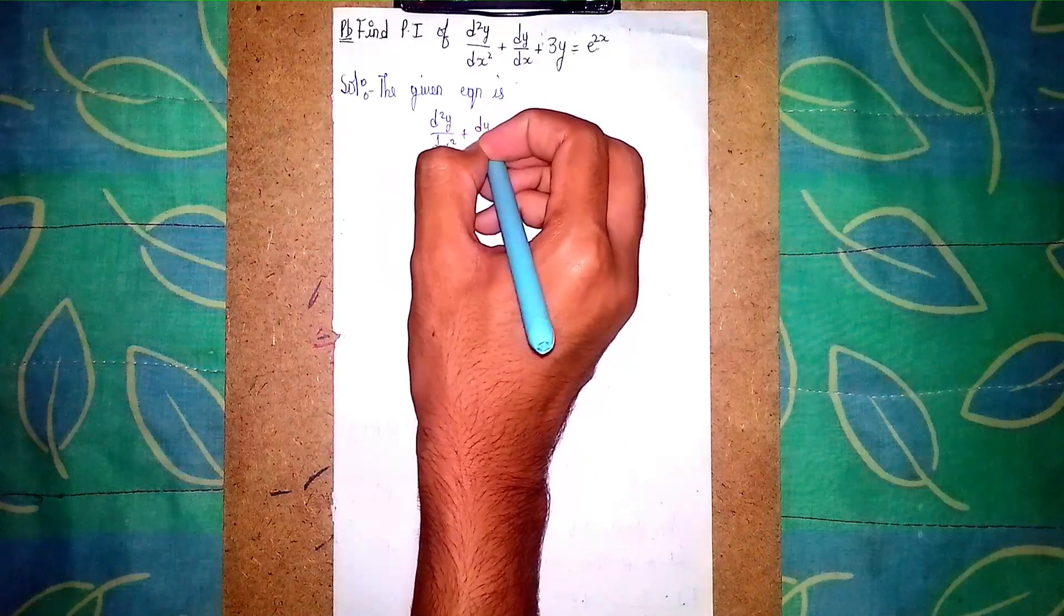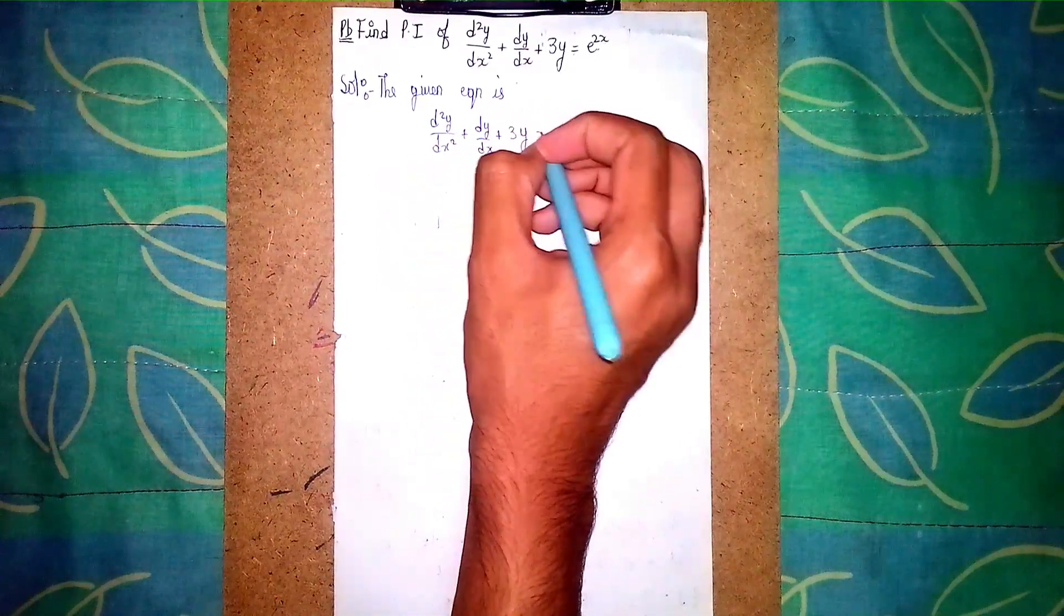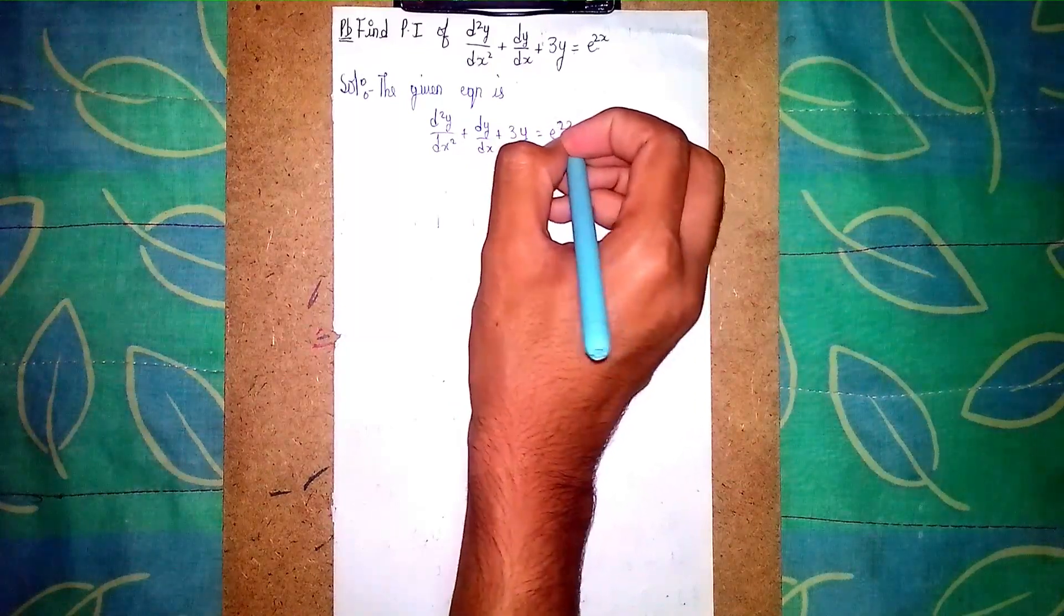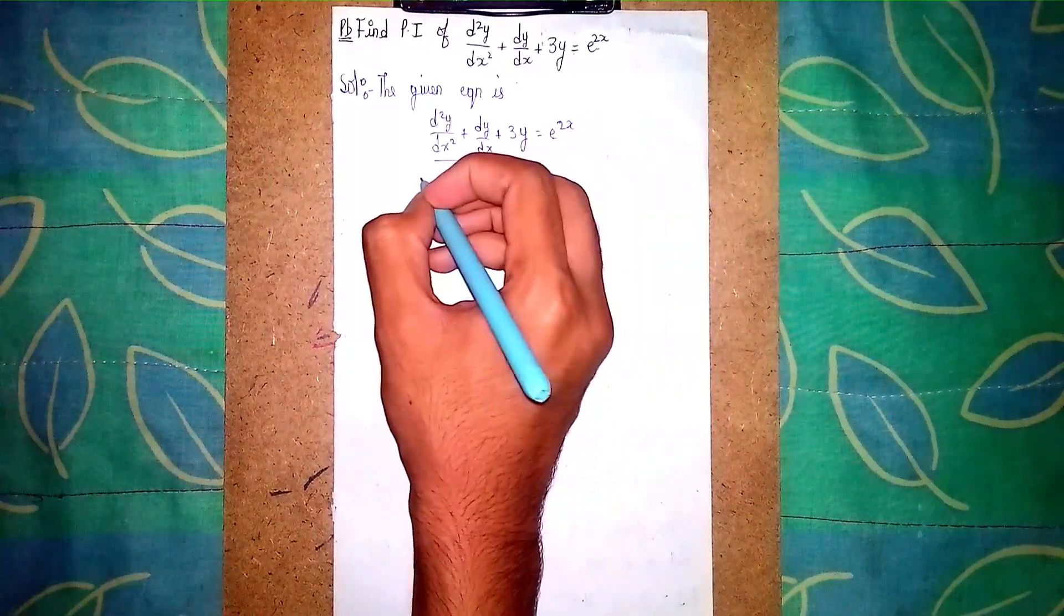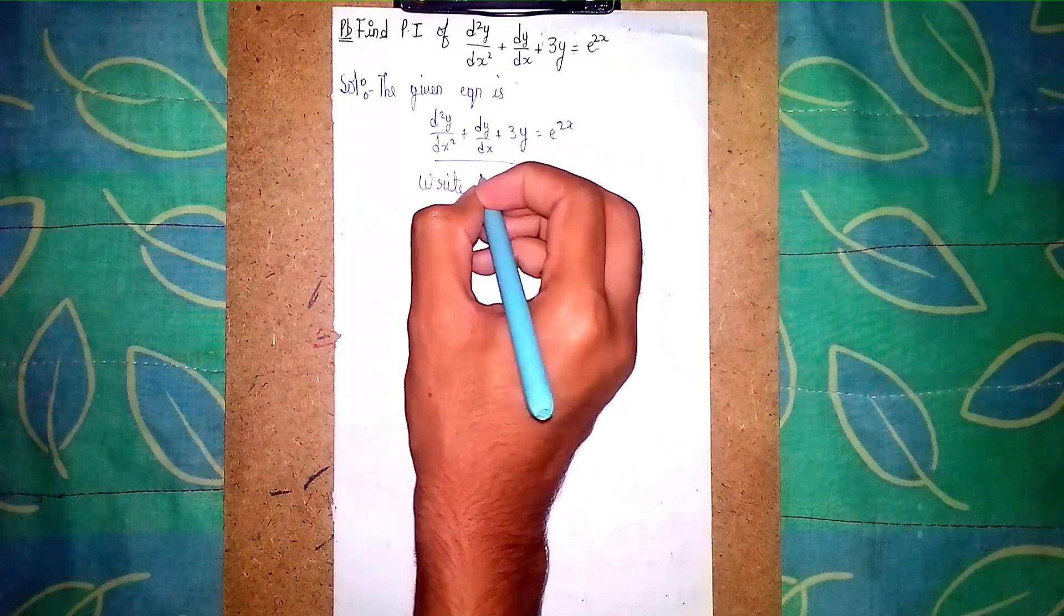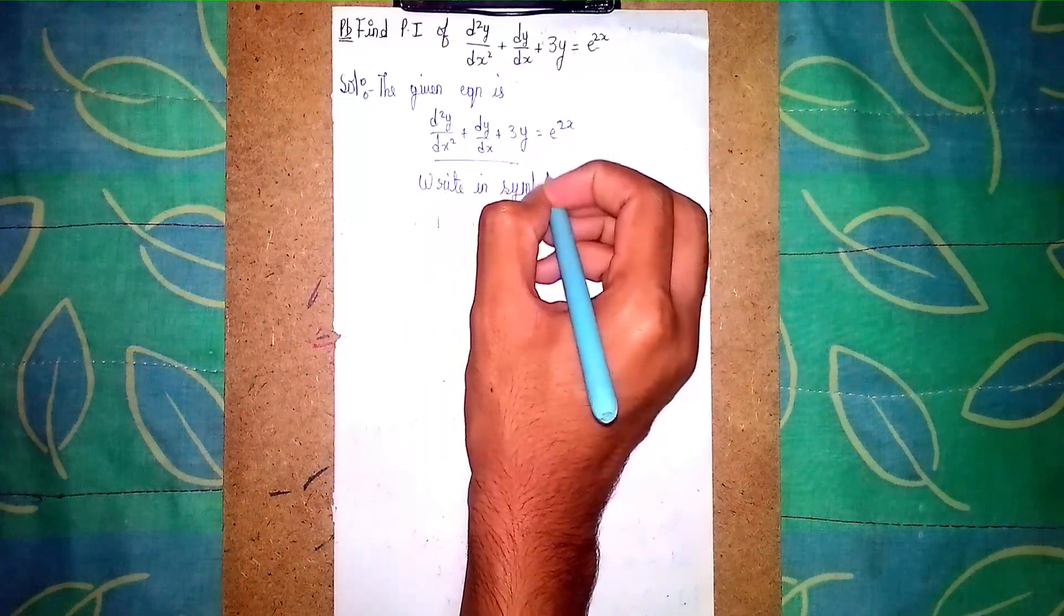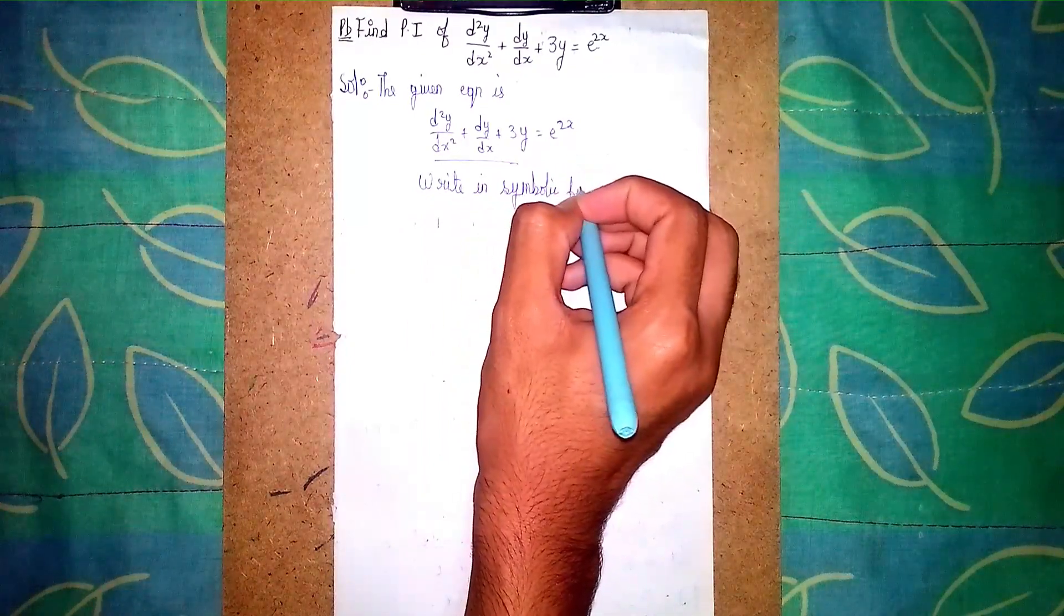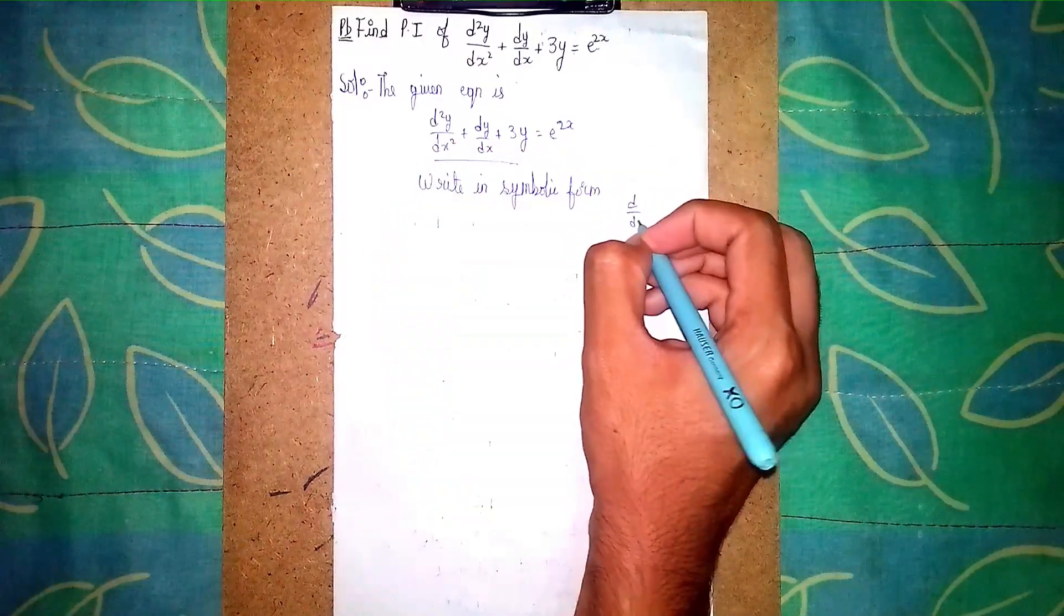Now in the left side, write this form in symbolic form. Symbolic form means instead of d/dx, I write capital D.